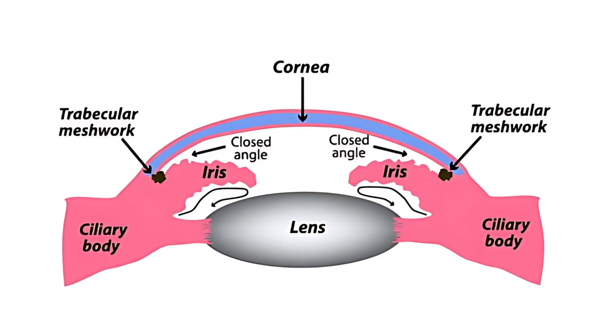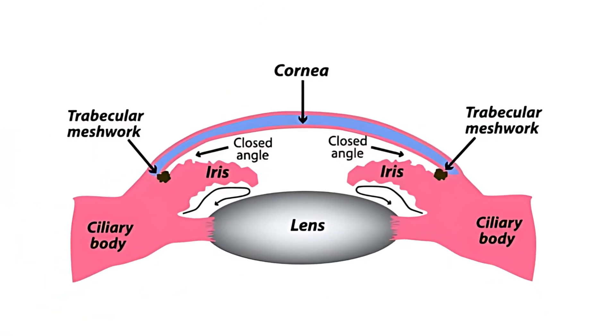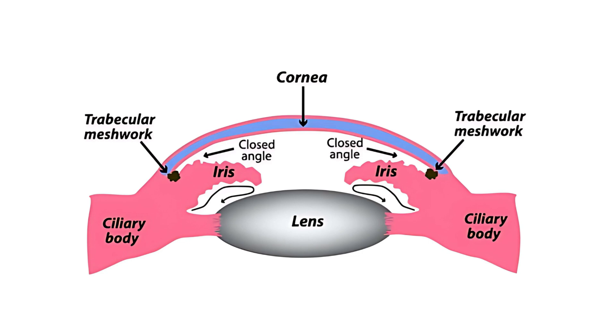Now, in some patients, their anatomy is just that their angle is narrow, so it is not as open as in other patients. When a patient has an anatomically narrow angle, it does not necessarily mean that they're going to have an attack of acute angle-closure glaucoma, but it certainly does mean that they're at increased risk for it compared to someone who has an open angle.